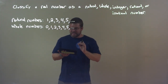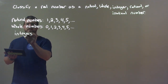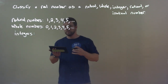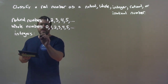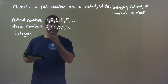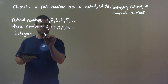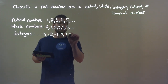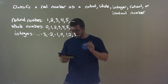Now, integers — we see integers a lot. Integers include more numbers; it's kind of more encompassing. They start with the negatives and go through the positives like the natural and whole numbers. So we have negative three, negative two, negative one, zero, one, two, three, and so on and so forth.